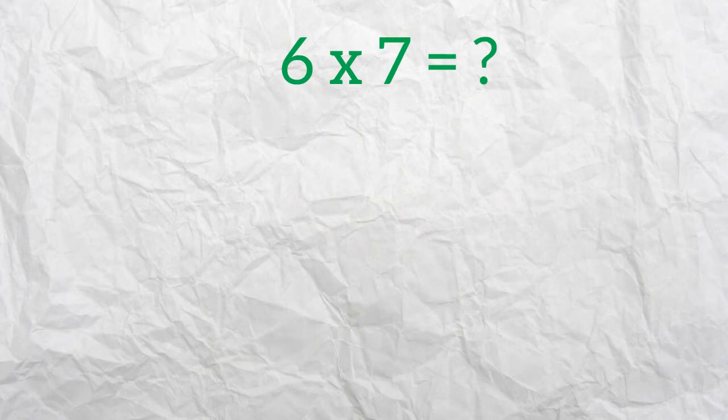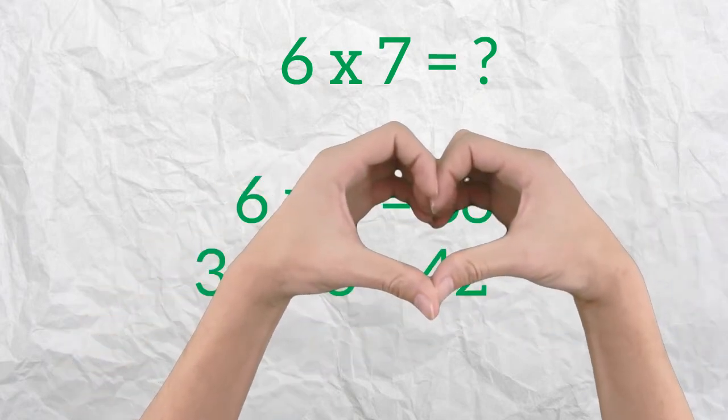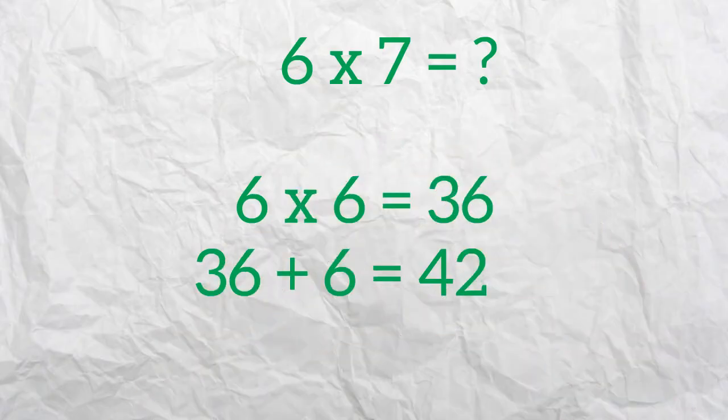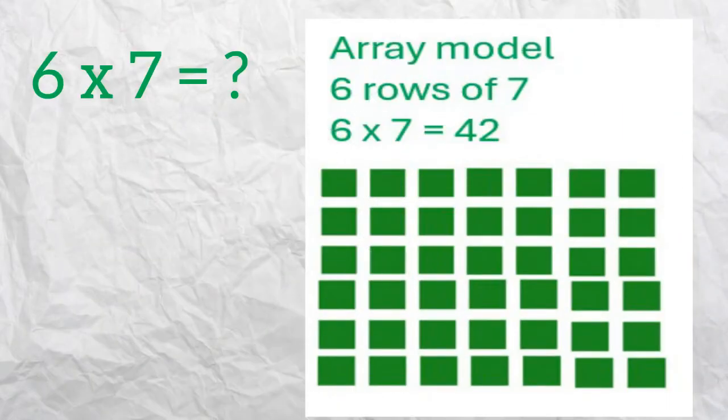well, I don't recall 6 times 7, but I remember that 6 times 6 is 36 and I know I just need one more group of 6 to find the answer. So 36 plus 6 equals 42. There's my 6 groups of 7. Or I could sketch an array of 6 rows of 7 squares and calculate my product as 42 using a visual approach.